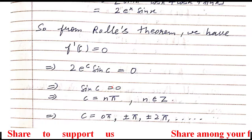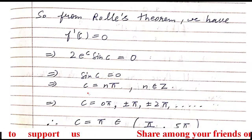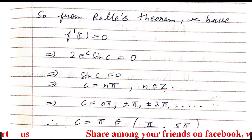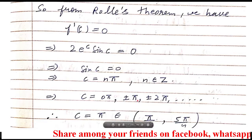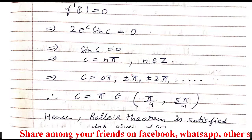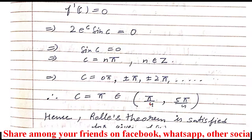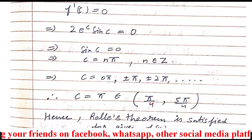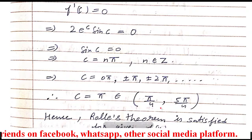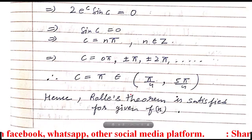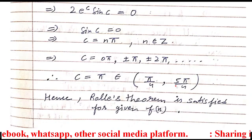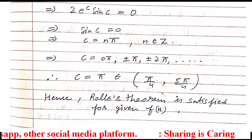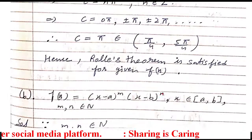Now, sin c = 0 means c = nπ, where n is an integer (0, ±1, ±2, ...). From these values, we select the one that belongs to the open interval (π/4, 5π/4). The value c = π belongs in this interval. Therefore, Rolle's theorem is satisfied for the given function in part (a).